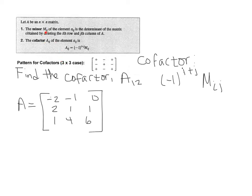So the minor, M1-2, which is what we're going to look at, tells us that we need to actually delete the first row and the second column of the matrix. So let's go ahead and do that. I'm going to do that with this yellow highlighter here.